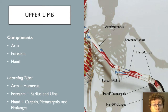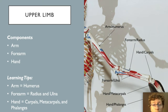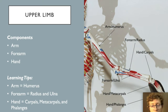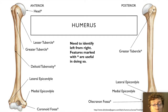After the pectoral girdle we encounter the upper limb, which consists of the arm, forearm, and hand. The hand includes carpal bones, metacarpals, and phalanges. Note that 'arm' specifically refers to the region where the humerus is; the forearm is where the radius and ulna are found.